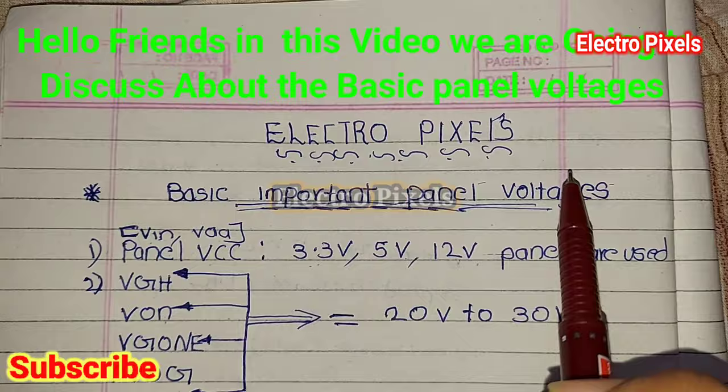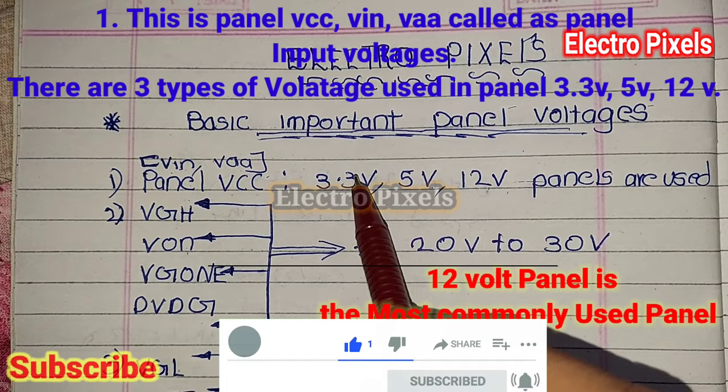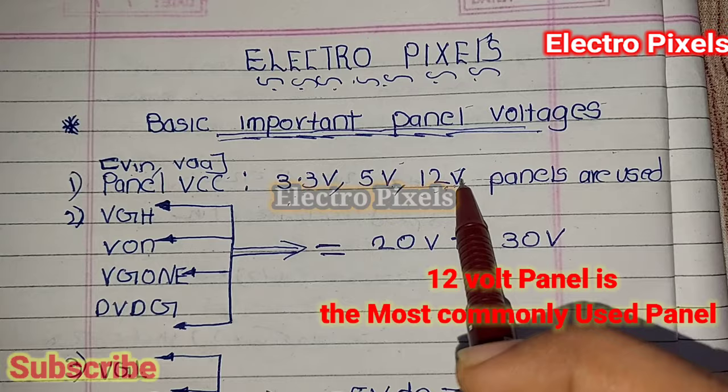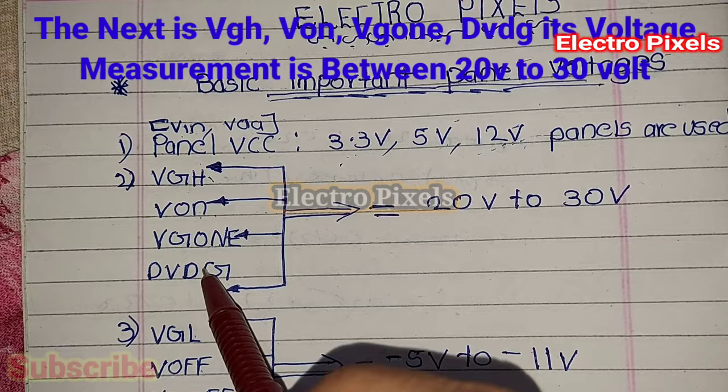The first one is the panel VCC, which is also called as voltage-in, V-in, or VAA. The three basic panel voltages are 3.3V, 5V, and 12V. These are the basic panel input voltages, called as panel VCC. The 12V panel is the most commonly used panel in LCD LED TV.